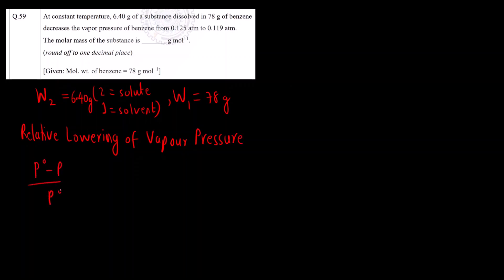What is the formula? P0 minus P divided by P0 equals X2. P0 is vapor pressure of pure solvent. P is the vapor pressure of solution. X2 is mole fraction of solute.